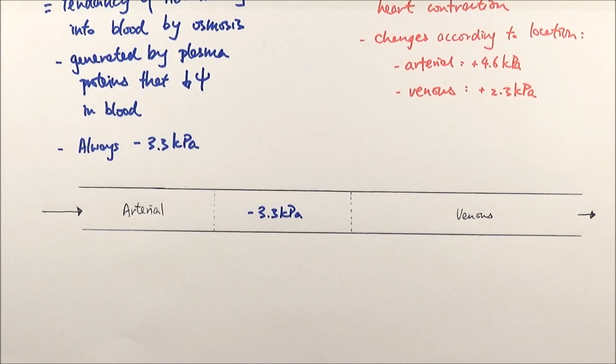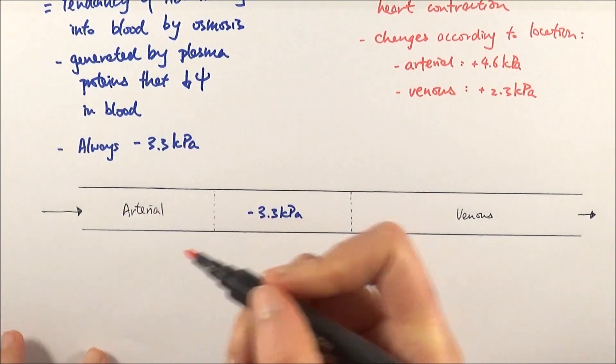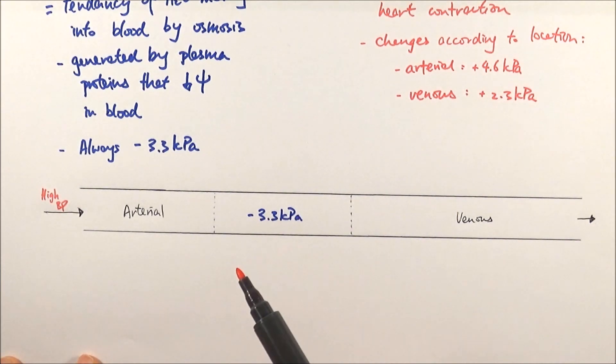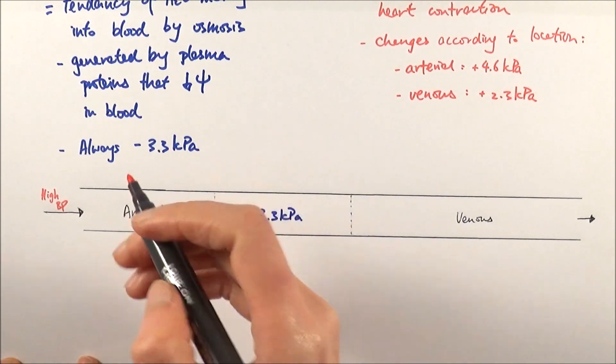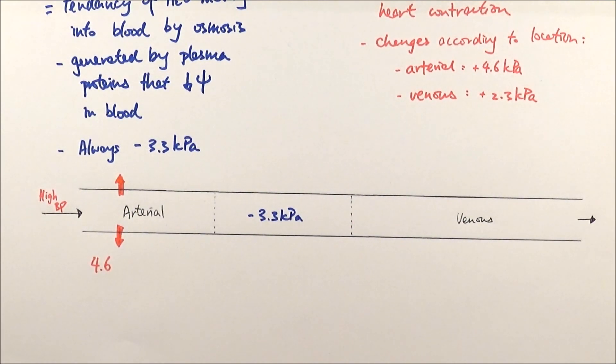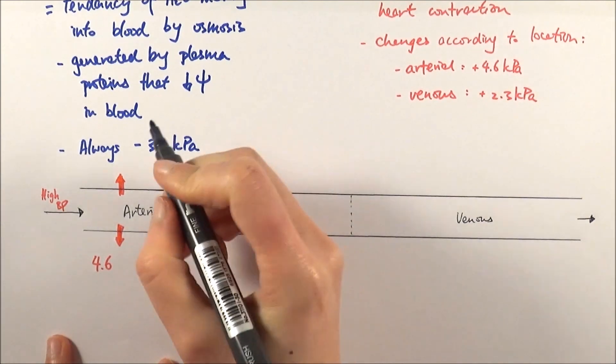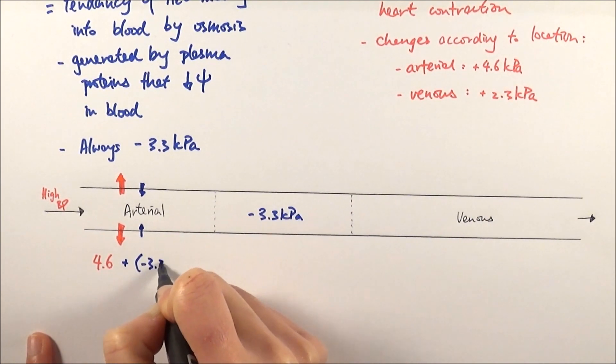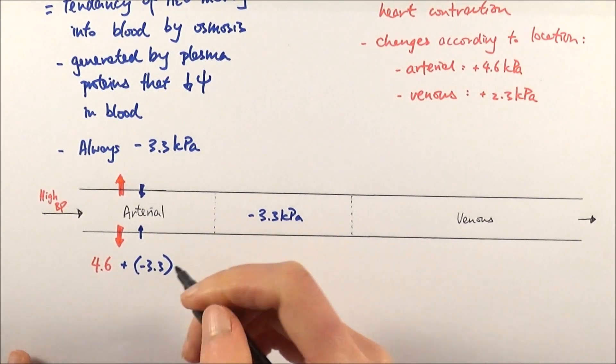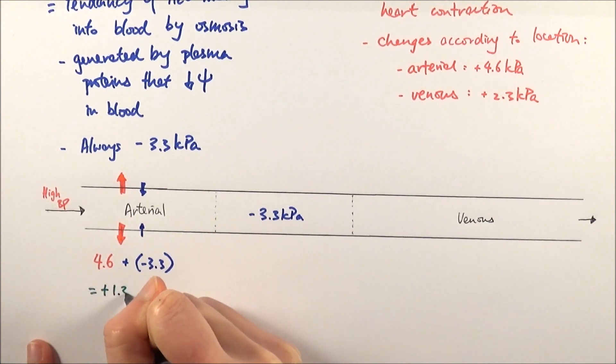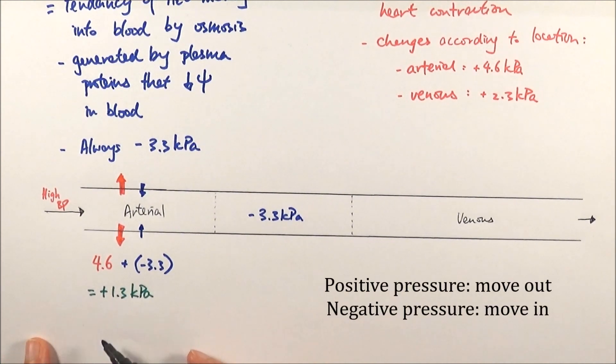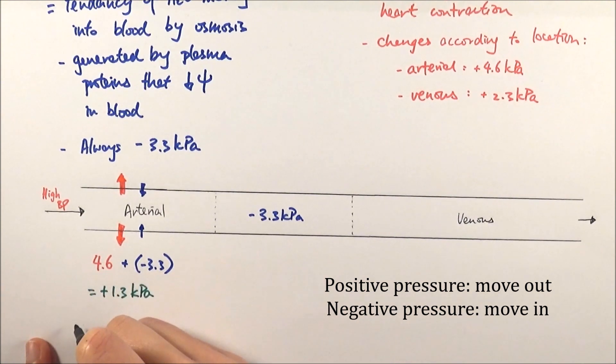At the arterial end, there is high blood pressure coming in. The hydrostatic pressure is plus 4.6 kPa. If it's positive, it means substances are trying to move out of the blood. At the same time, oncotic pressure is minus 3.3 kPa, trying to move in. If you compare the two, 4.6 kPa plus minus 3.3 kPa gives an overall filtration pressure of positive 1.3 kPa. Because it's positive, meaning it's trying to leave the blood, the overall net movement is out.